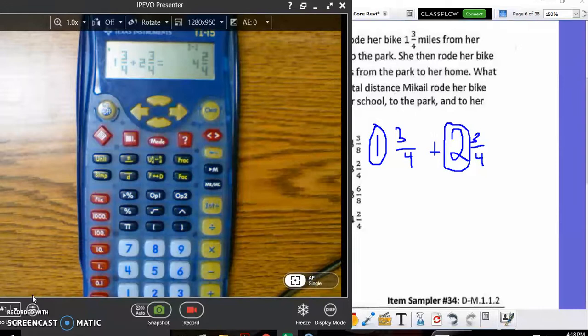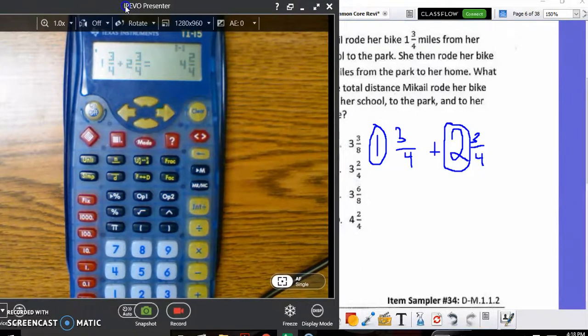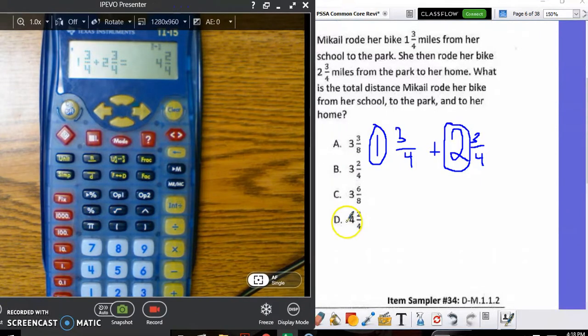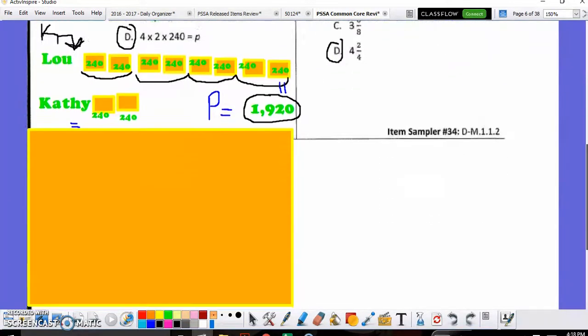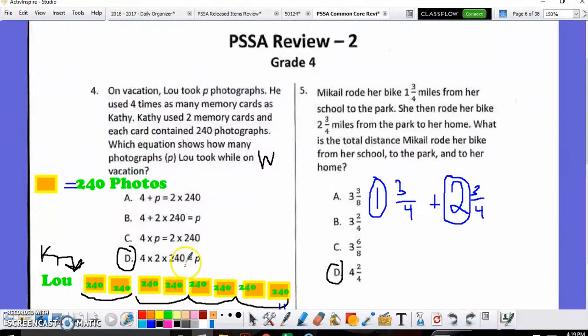That gets me four and two-fourths. Now, once again, I look at the choices and four and two-fourths is D. So, I can circle that as my final answer. Using the calculator will certainly help you. Make sure that you are following all the steps and you're not just using the calculator. You're also plugging it in correctly. Thanks and I hope this video helps tonight.